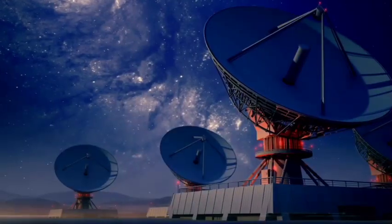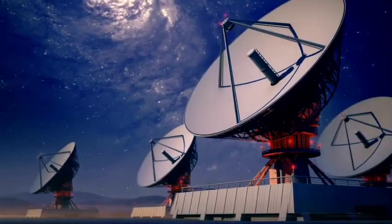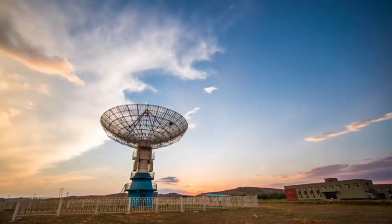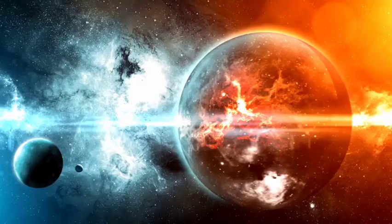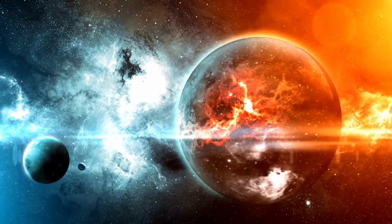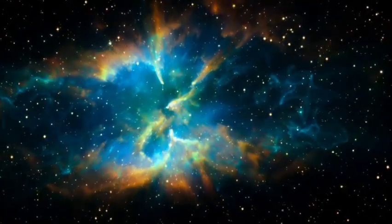The Path to Supernova: Betelgeuse's massive size, twice the mass of the Sun, and its red hue signal the end stages of its life. As a red supergiant, its core is collapsing while its outer layers expand and cool, leading to instability. This instability is why it fluctuates in brightness and why its final explosion is inevitable, though unpredictable.